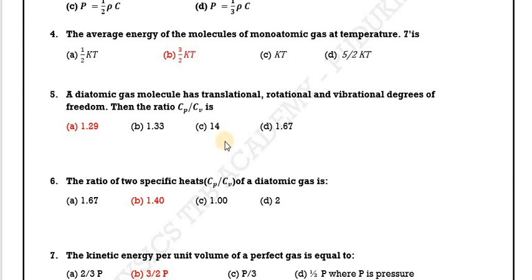Question 5 continued: For a diatomic gas molecule, there are translational, rotational, and vibrational degrees of freedom. Then the ratio cp by cv — for a diatomic gas at normal temperature, degrees of freedom equals 5. At high temperature, including vibrational degrees of freedom, the total degrees of freedom equals 7.